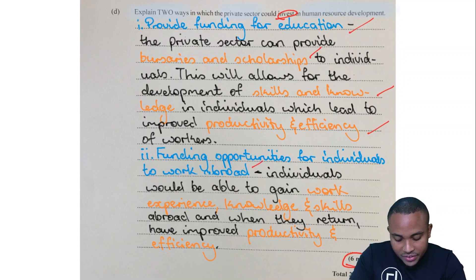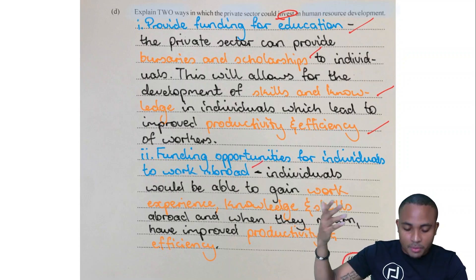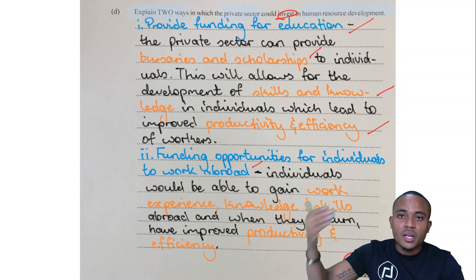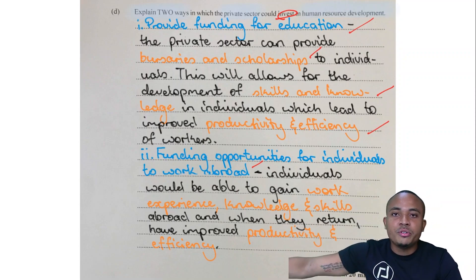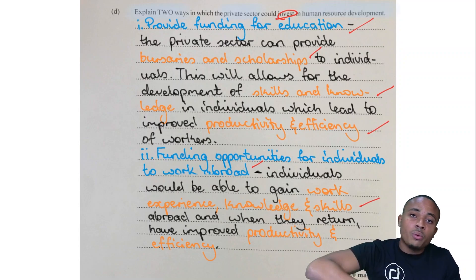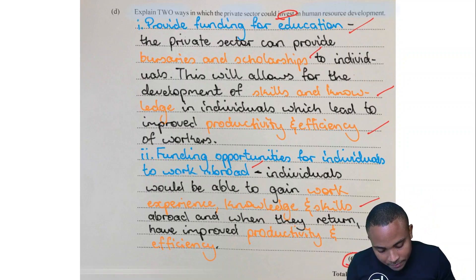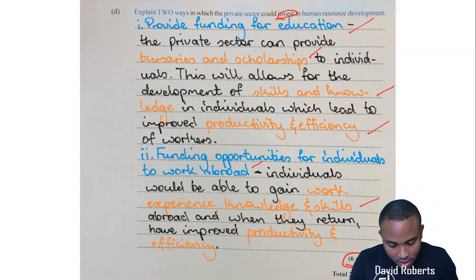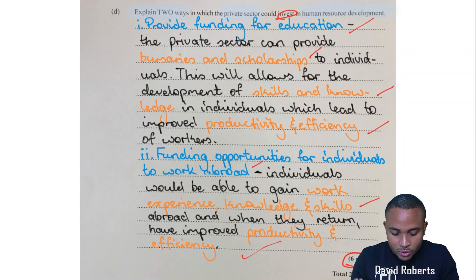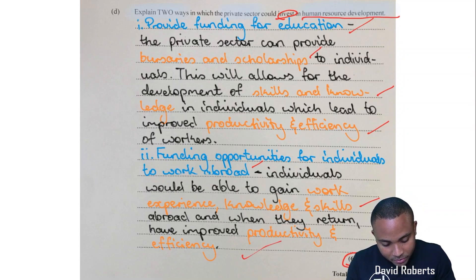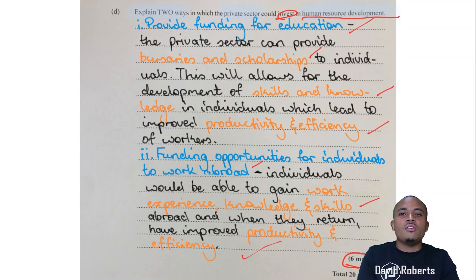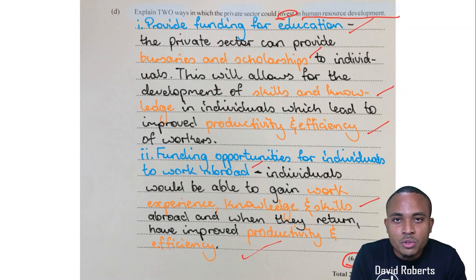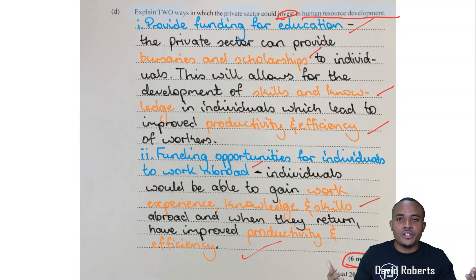The second way is funding opportunities for individuals to work abroad — one mark. When individuals go abroad, they gain work experience, knowledge, and skills from a completely different environment. When they return, they will have improved efficiency and productivity, which are signs that they are well developed in terms of human resources.